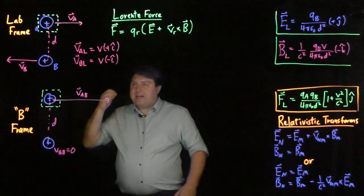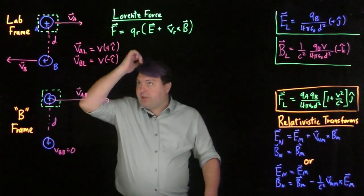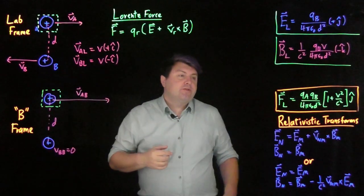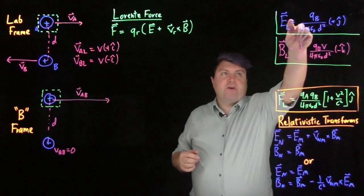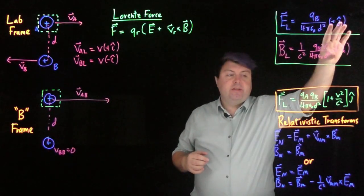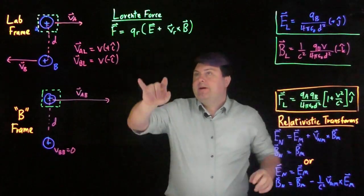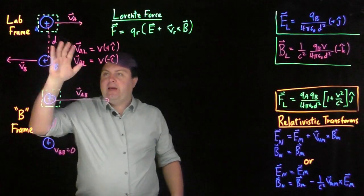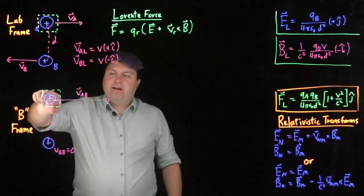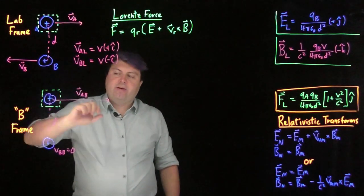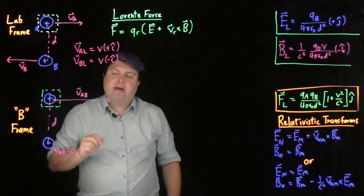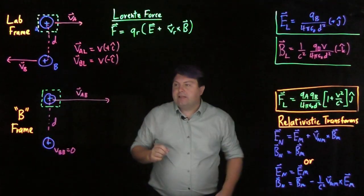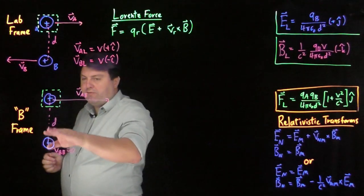Welcome! In the last video, we showed that in our lab frame, the Lorentz force could be calculated by first finding the electric field and the magnetic field in the lab frame, and then using the Lorentz force formula. We showed for the A frame that our forces agreed. Now let's take a look at the B frame.